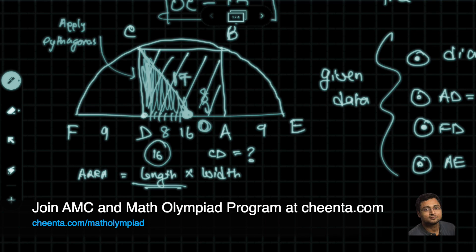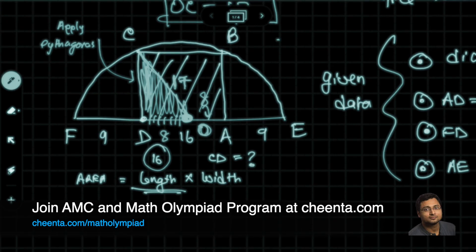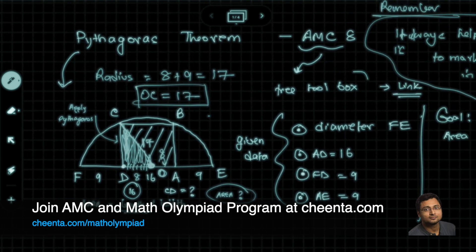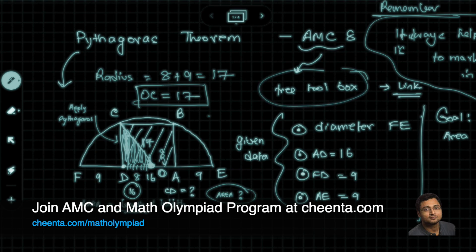Can you find out the value of CD and finally find the area of this rectangle? Put that in the comment. What is the area? It's just one line of application of Pythagorean theorem. Don't forget to check the free toolbox that we have. The link is again in the description. Thank you for watching and we will get back with more beautiful mathematics very soon.